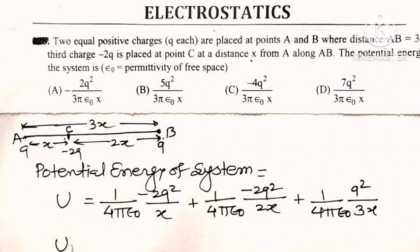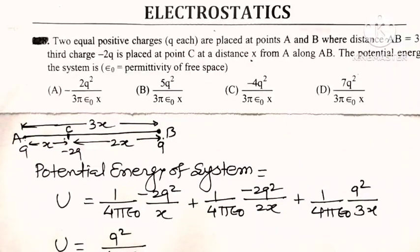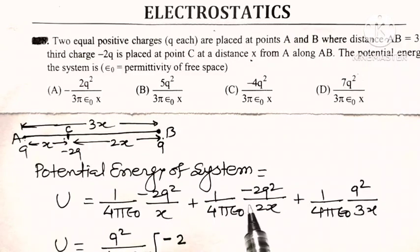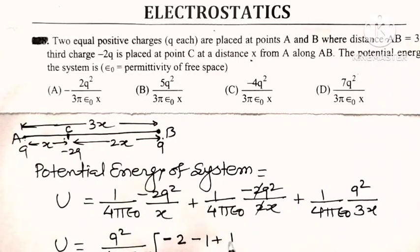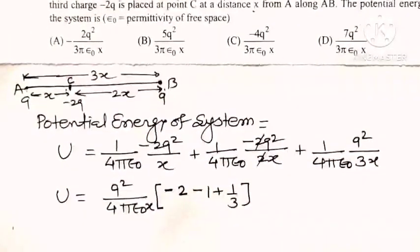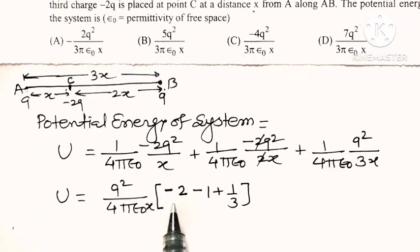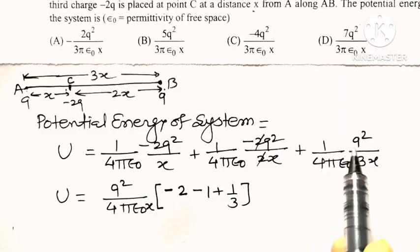The potential energy of the system is 1 upon 4 pi epsilon 0. Taking Q squared common, and also taking x outside, we get Q squared upon 4 pi epsilon 0 x, with the bracket containing minus 2, then minus 1, then plus 1 by 3.